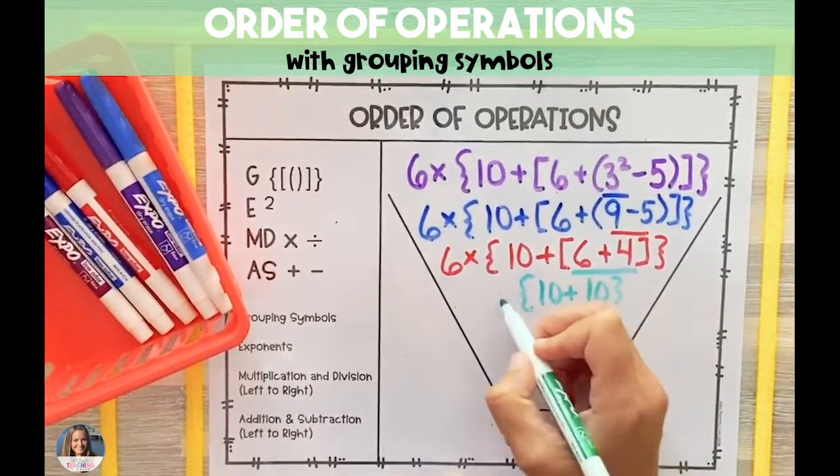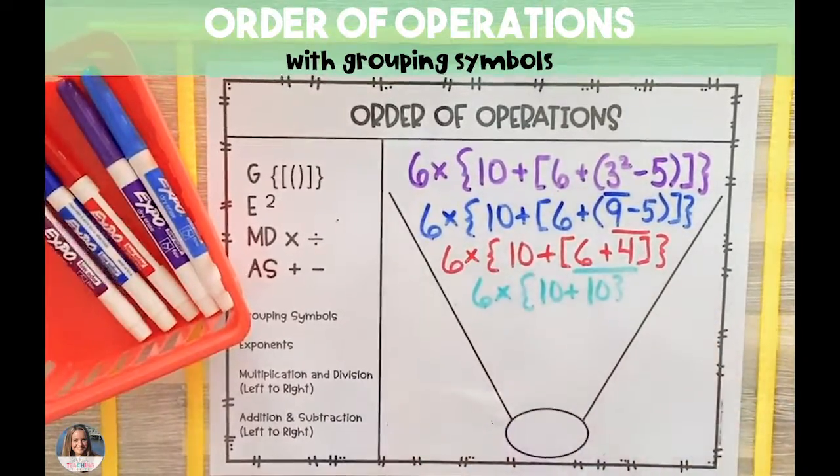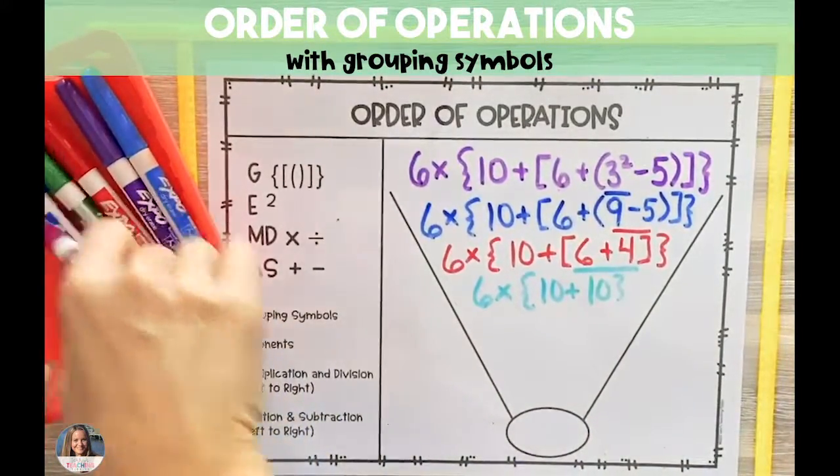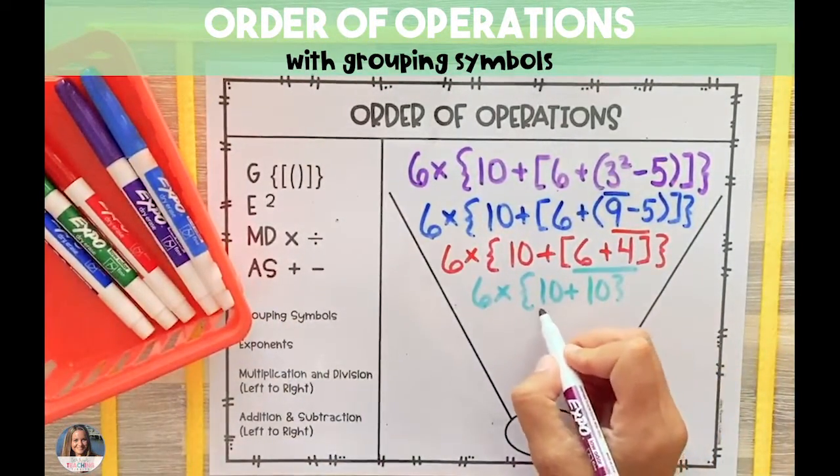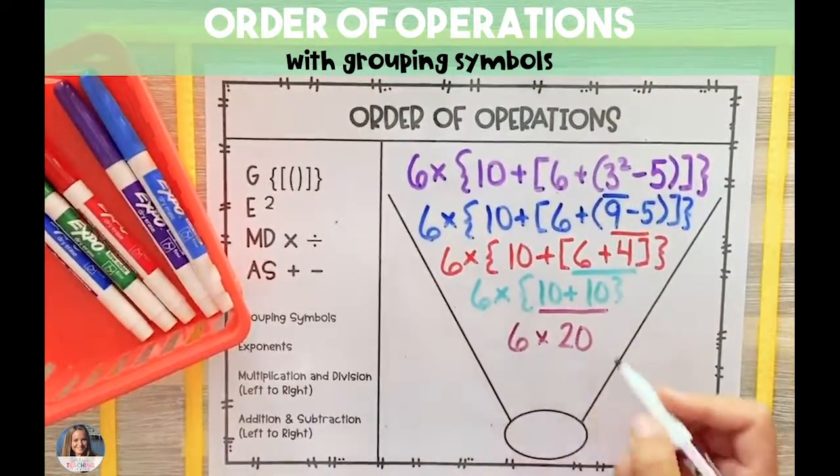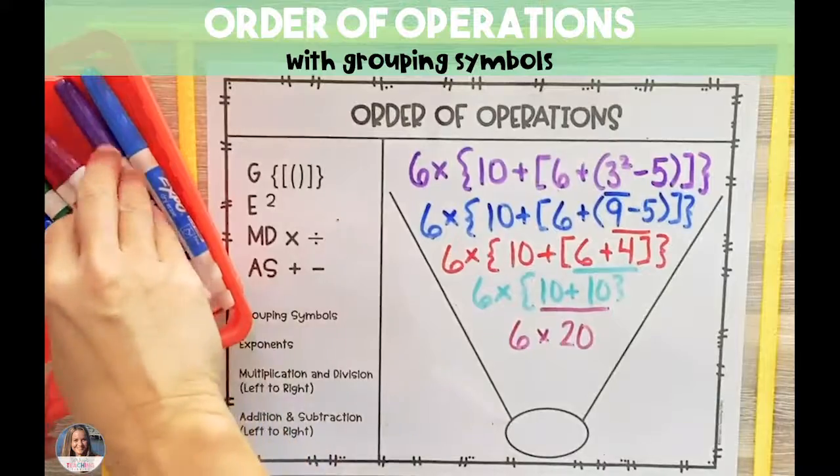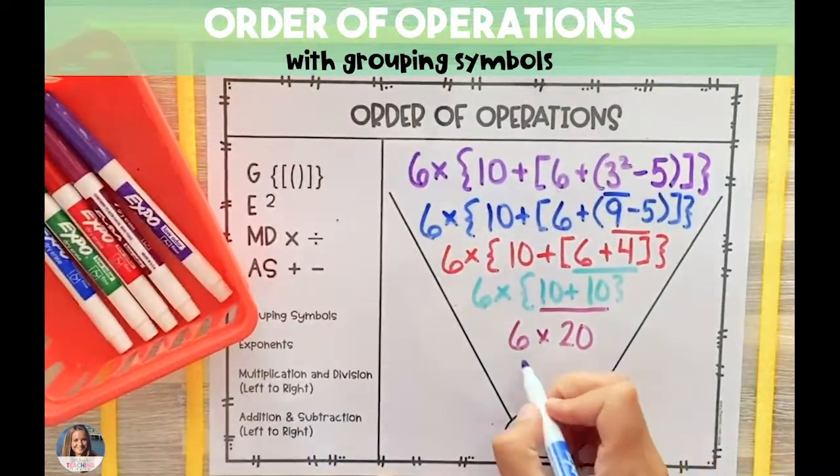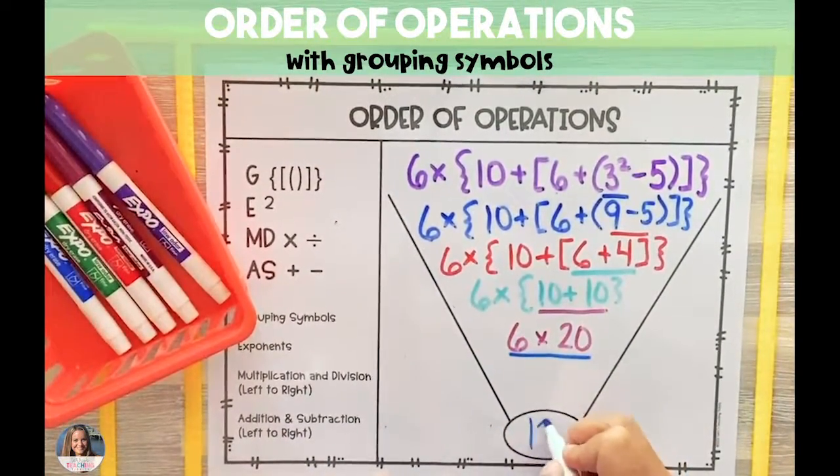Since everything inside the brackets has been solved, the brackets disappear. And then we have our braces left. That's the last grouping symbol that we're going to solve. 10 plus 10 is 20, and then the final operation is multiplication. And 6 times 20 is 120.